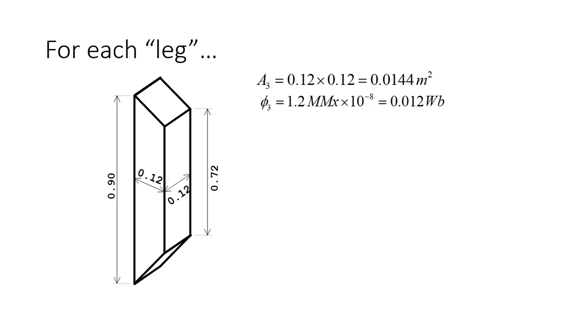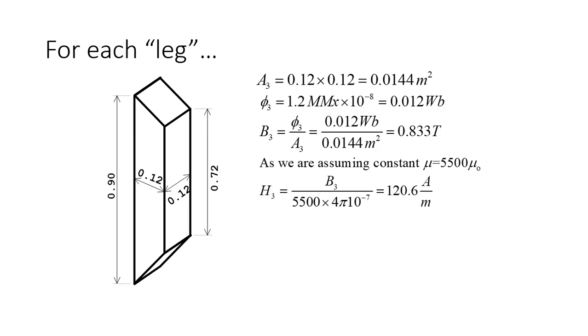Because the flux is 1.2 mWb, I divide the flux by the area to get the flux density 0.833 teslas. And because we are assuming the permeability of the iron is 5,500 times μ₀, we can compute what is the value of H. B divided by μ. That is the value of H, the magnetic field: 120.6 amps per meter.